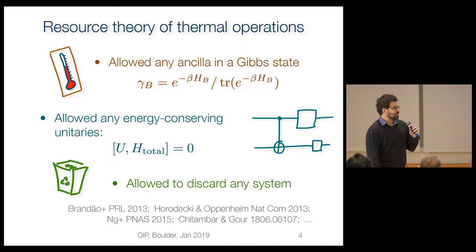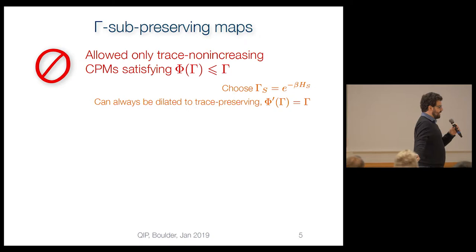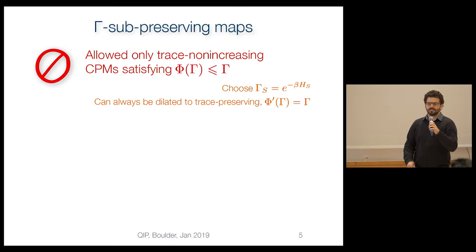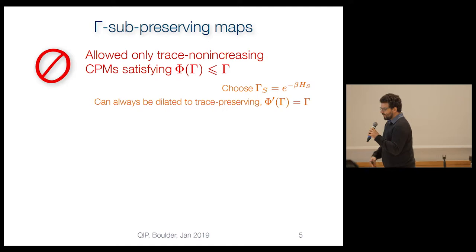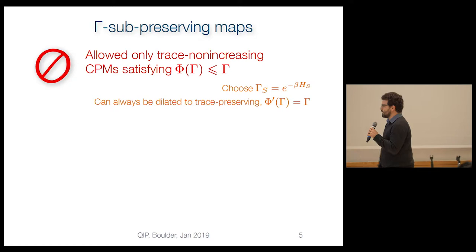There's actually another approach: noticing that all of these operations conserve the thermal state — whatever you do, the thermal state gets mapped to the thermal state. So why not just impose that as a rule? We can build an alternative framework — framework two — in which you allow anything that conserves the thermal state. Think of that as a technical simplification that allows us to better characterize what we're able to do. The operator inequality on the slide just represents preserving the thermal state.